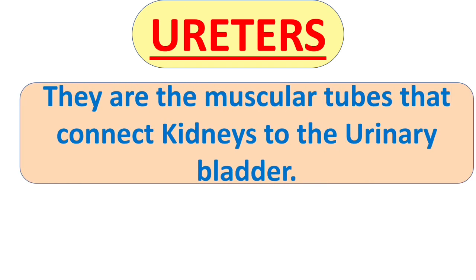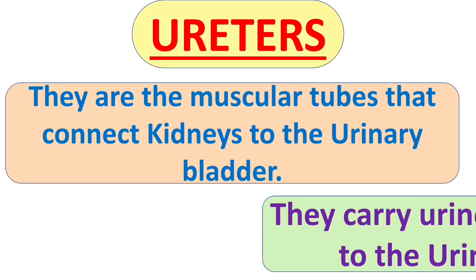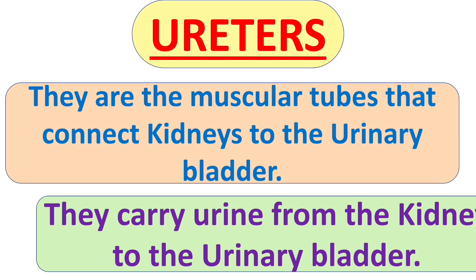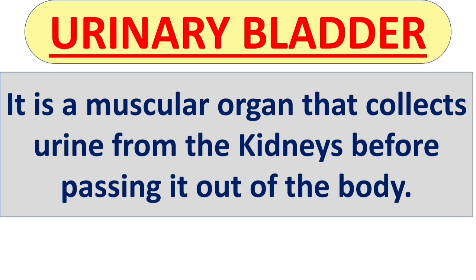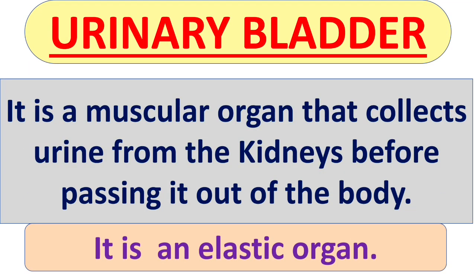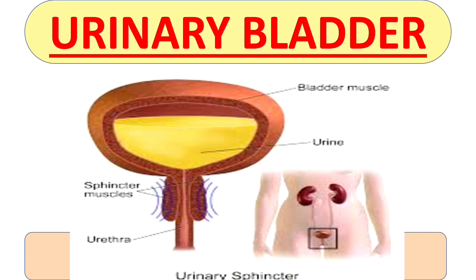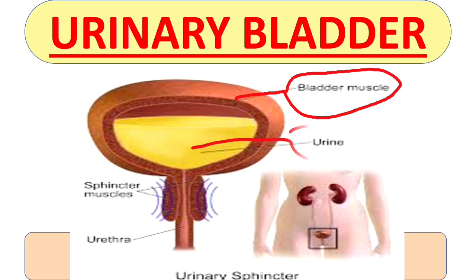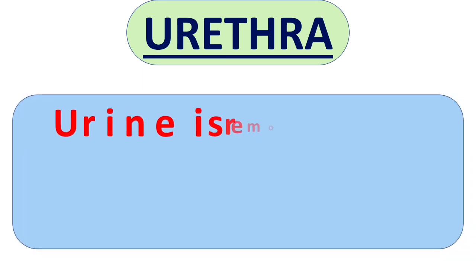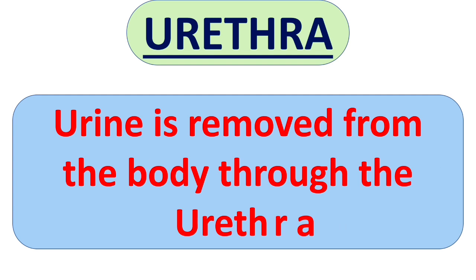Next are ureters. They are muscular tubes that connect the kidneys to the urinary bladder. They carry urine from the kidney to the urinary bladder. The urinary bladder is a muscular, elastic organ that collects urine from the kidney before passing it out of the body — it is shaped like a bag, as you can see in the picture. Urine is finally removed from the body through the urethra.